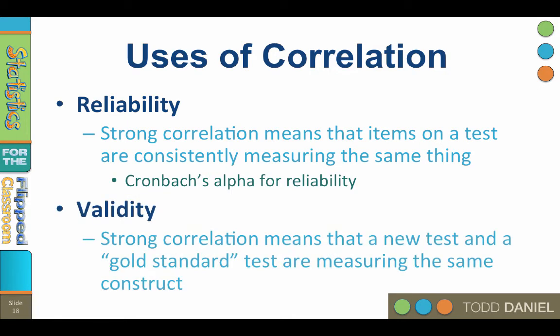Number two: validity. If you were developing a brand new test of intelligence, you would want to demonstrate that your test correlates strongly with an existing measure of intelligence — that it is measuring the same construct as the first intelligence test. A strong correlation between a new test and a gold standard test means that they are measuring the same construct and that your new test is valid.